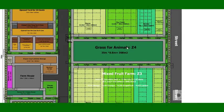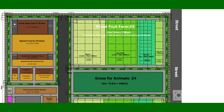Zone four is the grass area for animals. As you see here, we have animals inside the farm and these animals need grass. In zone four we cultivate grass for our animals; it is about 300 square meters.